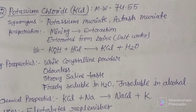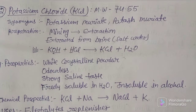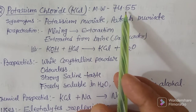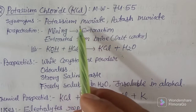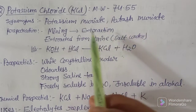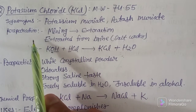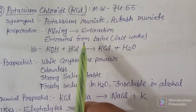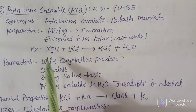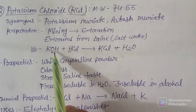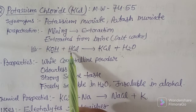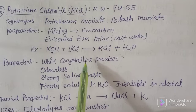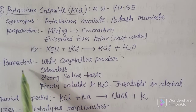The second electrolyte used for replacement therapy is potassium chloride (KCl), with a molecular weight of 74.55. Its synonyms are potassium muriate. It can be obtained by a mining process followed by extraction, and it can also be extracted from brine, which is salt water. In the laboratory, it can be obtained by reacting potassium hydroxide with hydrochloric acid, removing water (H₂O) to form KCl.